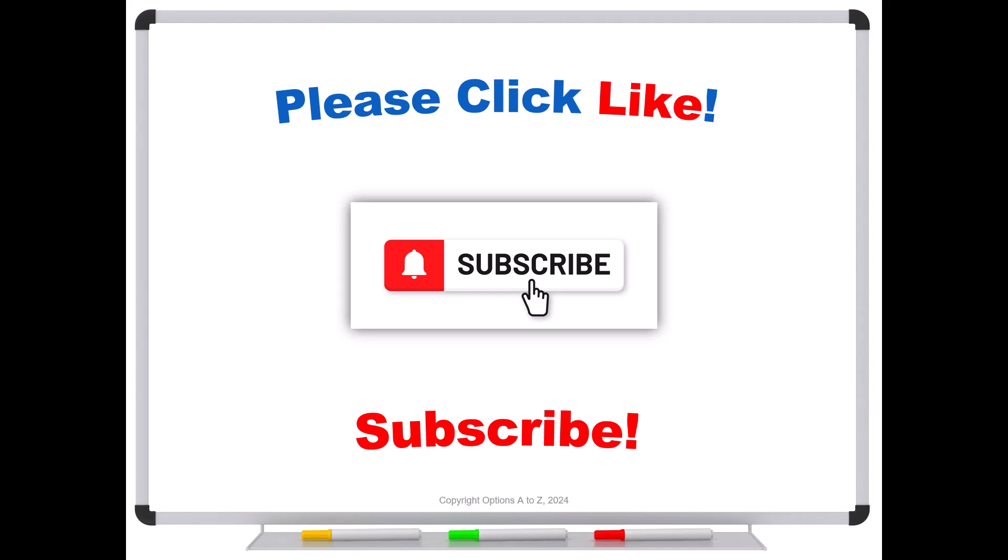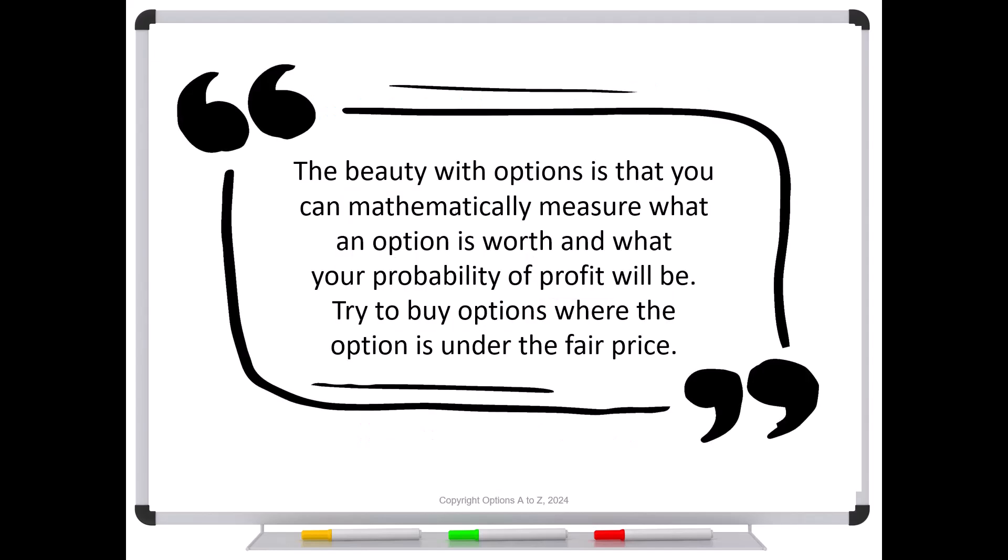So in this little section of the book, he says, the beauty with options is that you can mathematically measure what an option is worth and what your probability of profit will be. Try to buy options where the option is under the fair price. Well, this is loaded with so many mistakes, I don't even know where to start. But it's like saying, try to buy options that will only produce profits. To say that we can mathematically measure what an option is worth is completely false. It is true under a set of assumptions. But of course, we have to wait and see if those assumptions come true. So can you mathematically measure what an option is worth and what your probability of profit will be? Not really.